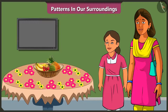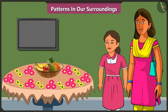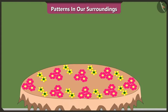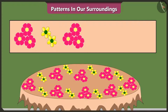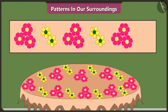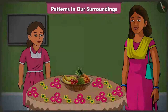Mummy, our table cloth also has a pattern. Did you notice? Vinny, what is the pattern of this cloth? It has three flowers, then two flowers, then again three flowers, two flowers, three flowers, two flowers. It gets repeated and that's how this pattern is created.